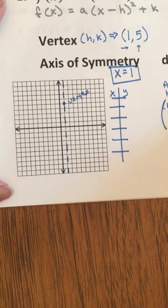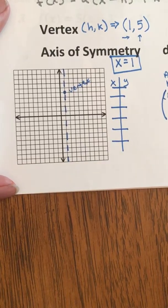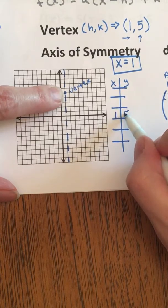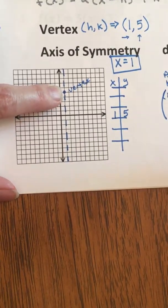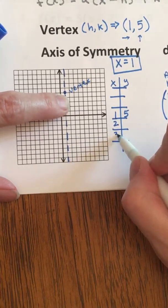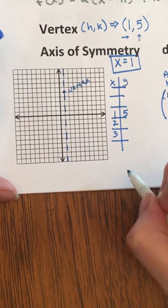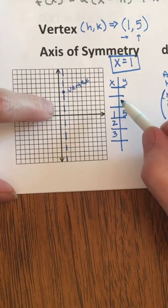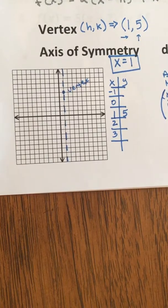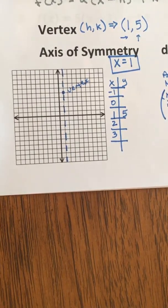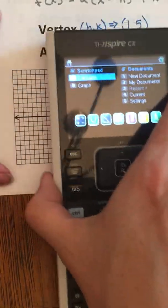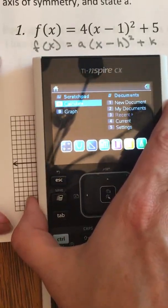I like to have 5 coordinate points on my table, if possible. I always put my vertex in the center, 1, 5. And then I look to the right of my vertex, 2, 3. And I look to the left of my vertex, 0, negative 1. I should get the exact same heights on the right and the left. Let's go look in our calculator and see what we find.